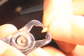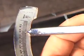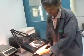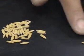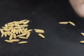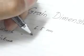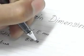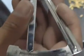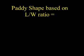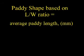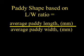To obtain the average length and width of the paddy grains, use a vernier caliper or photographic enlarger. Collect 20 paddy samples at random from each replicate and measure the dimensions. To obtain the paddy shape, the following equation will be used: the average paddy length in millimeters divided by the average paddy width in millimeters.